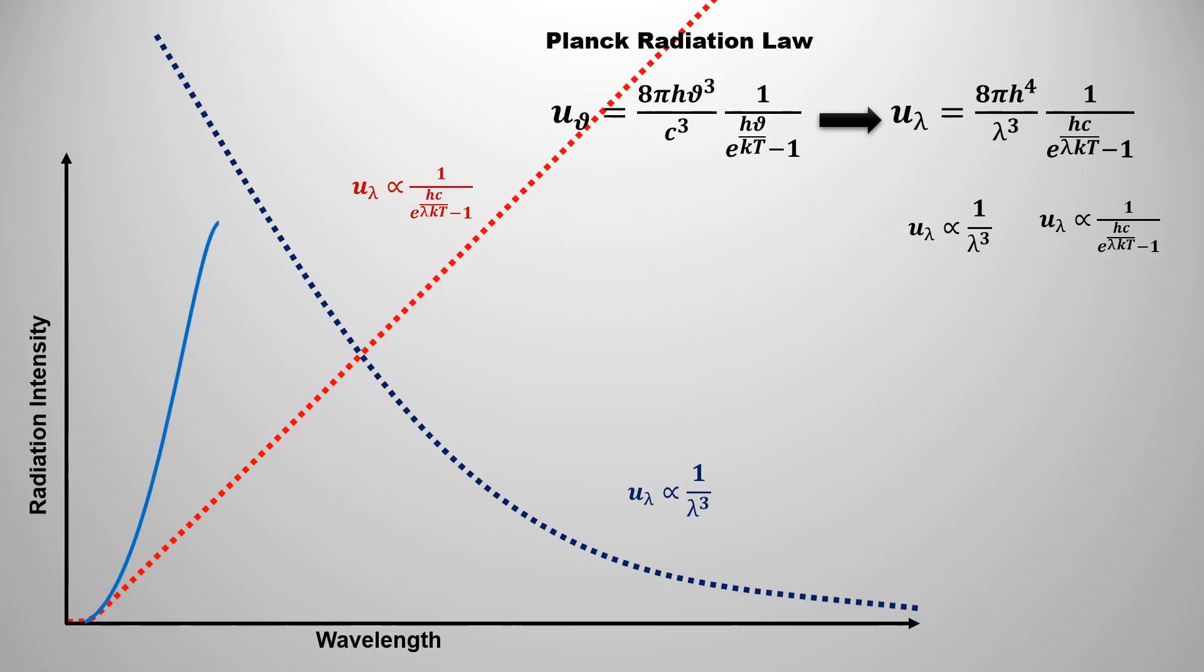This wavelength is known as peak or dominating wavelength. As the wavelength increases further, the 1 by lambda to the power 5 curve becomes dominating and the effect of the exponential term decreases. So that overall radiation starts decreasing.